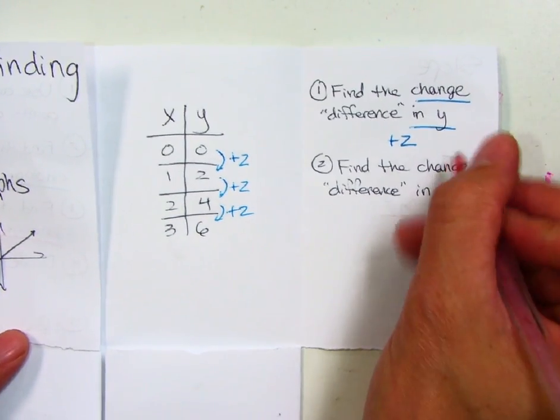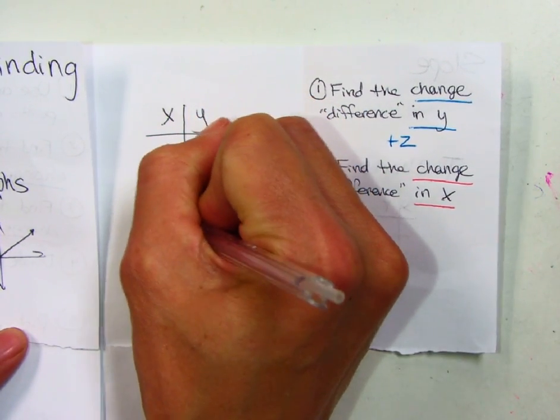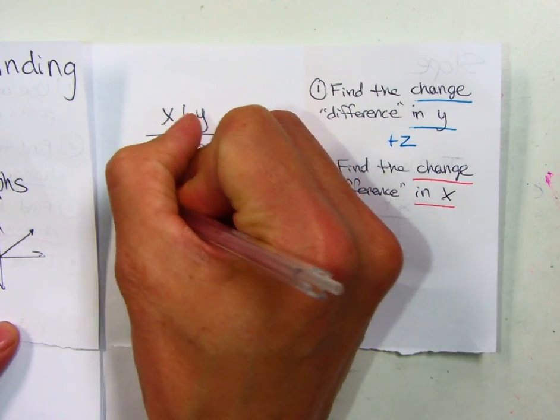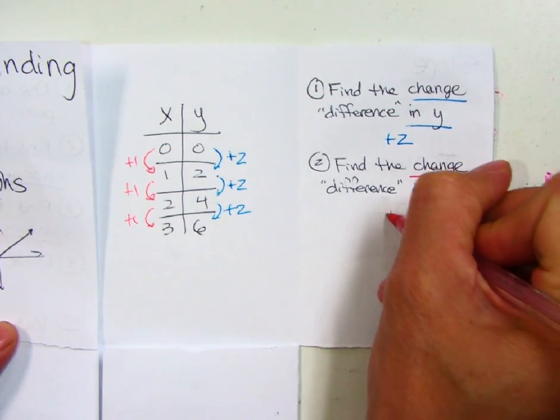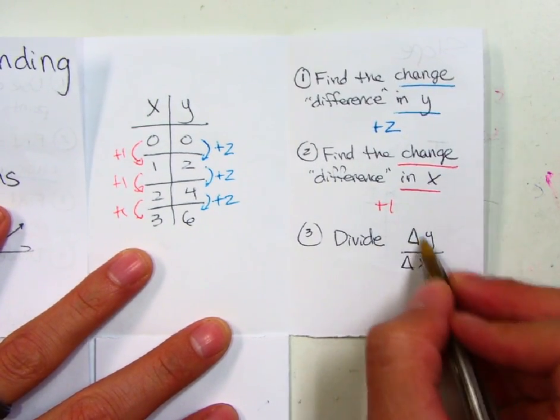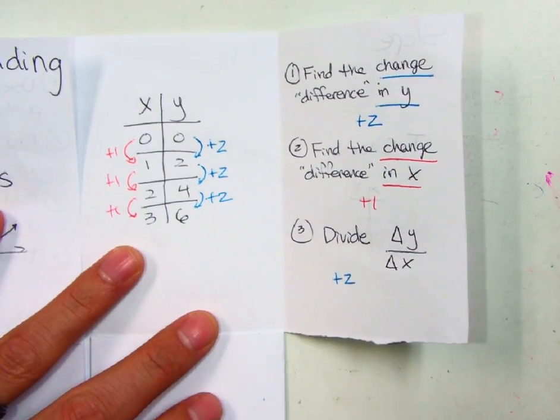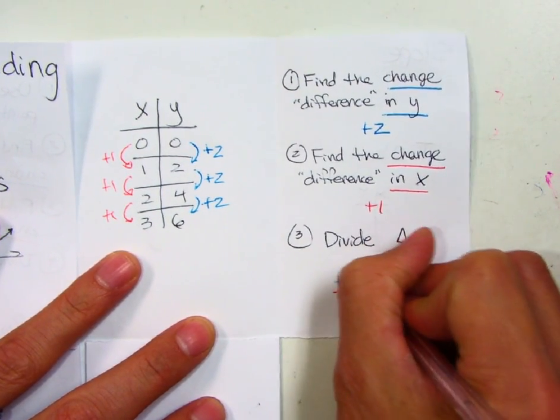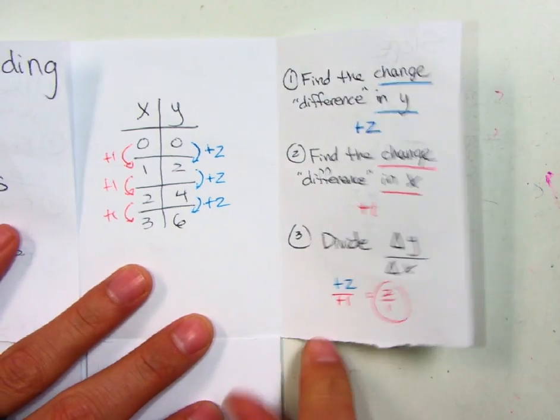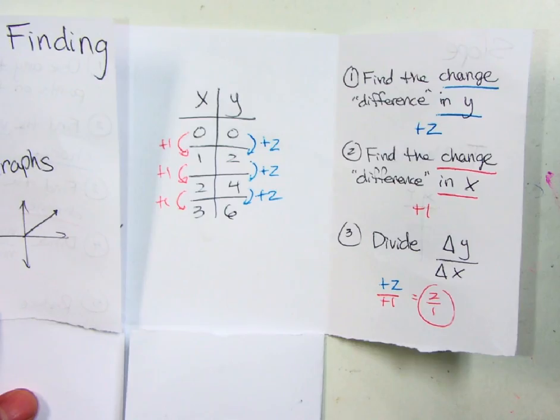Next, I want to find the change in x. So I'm looking at the x side over here now and I ask myself, hey, each step, what's happening? Well, it's going up by one in this particular case. So I put plus one. Last thing I want to do is I want to do the, remember, triangle means change. So change in y, that was two over the change in x, which was one. And that's just two over one, which happens to be the same slope as we found out. We're just finding it a different way.